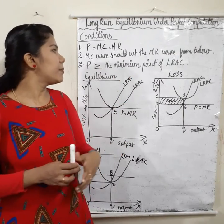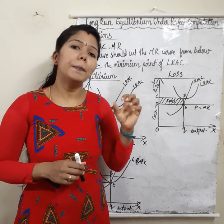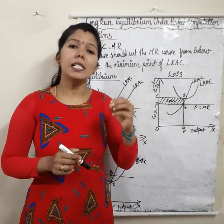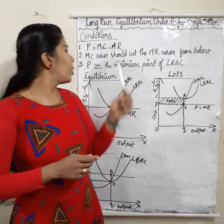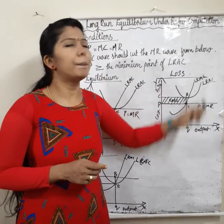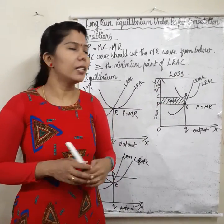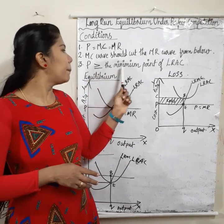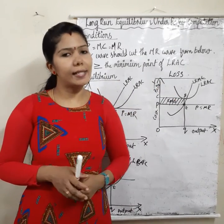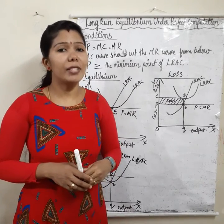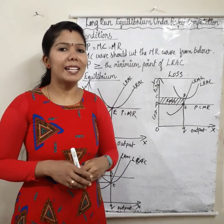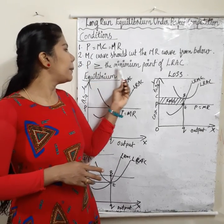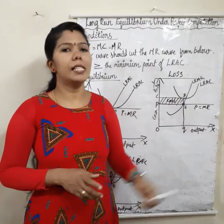The second condition: MC curve should cut the MR curve from below. That means non-decreasing — MC curve should be non-decreasing, that means increasing. The third condition: price is greater than or equal to the minimum point of LRAC — long run average cost. Price should be equal to or greater than the minimum point of LRAC.